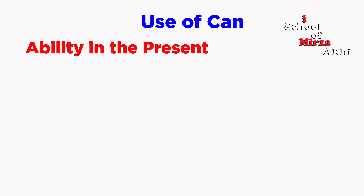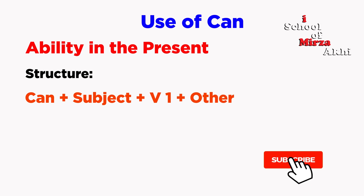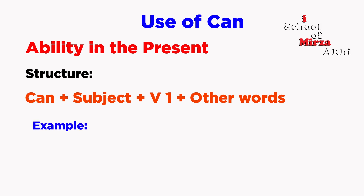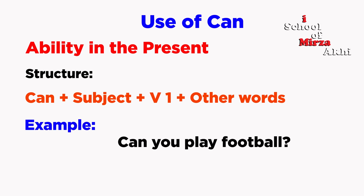Ability in the present — question structure: Can plus subject plus V1 plus other words. For example: Can you play football?